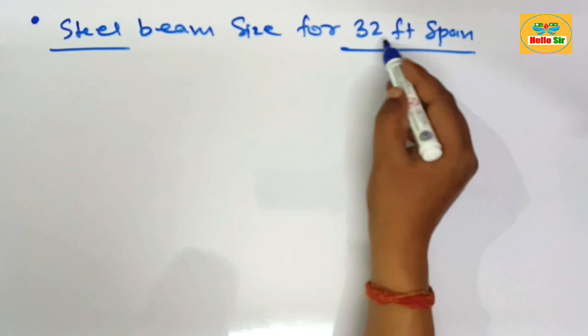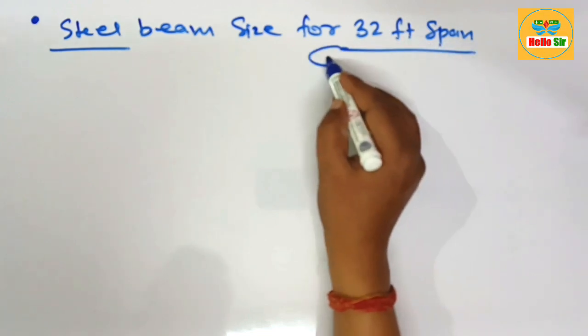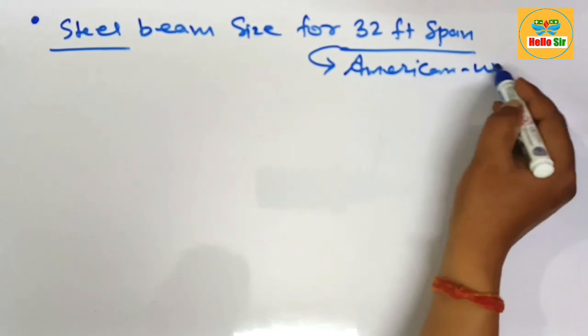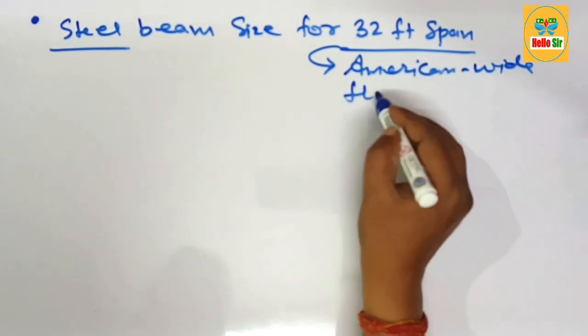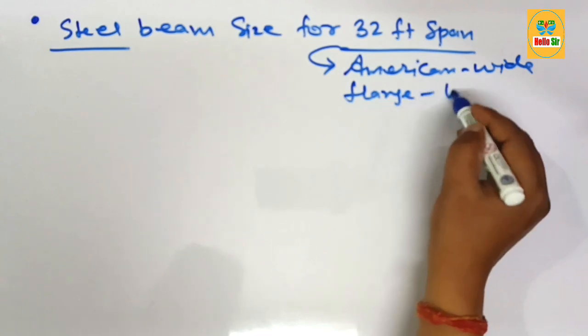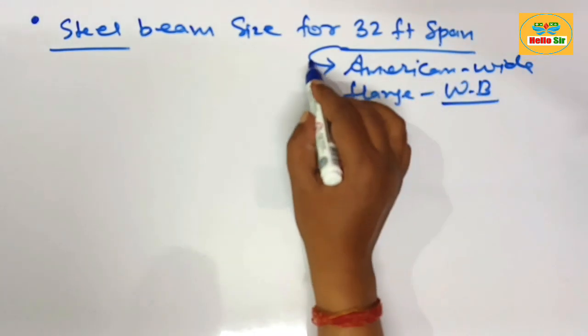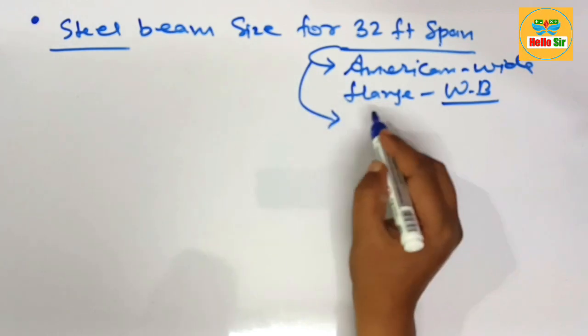As you know that the steel beam is American wide flange beam denoted by W, and that's why it is also known as W beam. As per another practice, the steel beam is also called I-beam, H-beam, and universal beam.